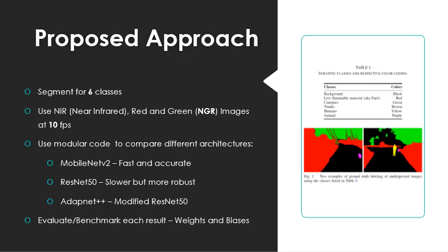To achieve the requirements, we decided to segment for six classes as it can be seen in the sample image. It includes classes for humans and fauna, purple for animals and yellow for humans, flora, green for canopies, brown for trunks, and the flammable material in red. The last being background in black for anything that is not the previous five classes. We utilized the NGR images trying to achieve 10 frames per second for real time. If the robot moves fast, it could easily avoid humans or animals in that frequency.